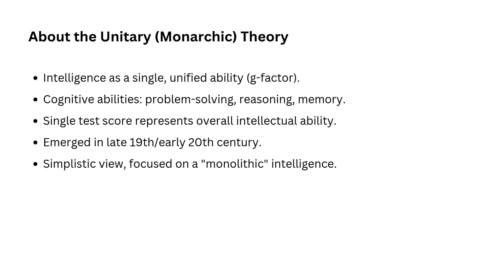First, let us talk about what this theory actually is. The Unitary or Monarchic Theory of Intelligence suggests that intelligence is a single, unified ability. According to this theory, all cognitive abilities — whether they involve problem-solving, reasoning, or memory — are expressions of one core general intelligence. Unlike modern theories that divide intelligence into multiple factors, this approach looks at intelligence as something monolithic, like a monarch ruling over all intellectual functions.